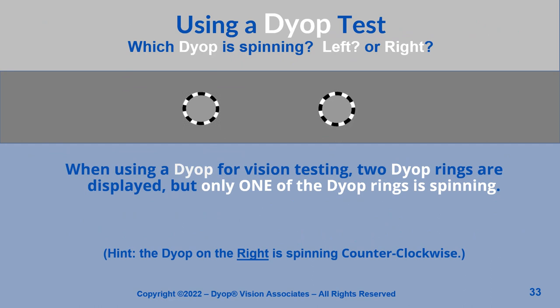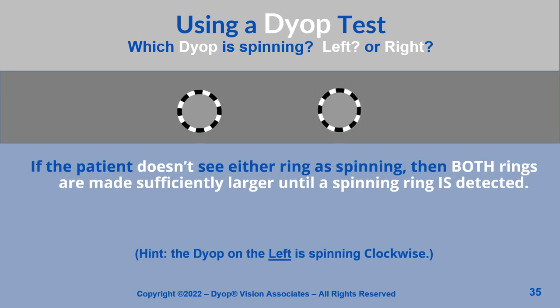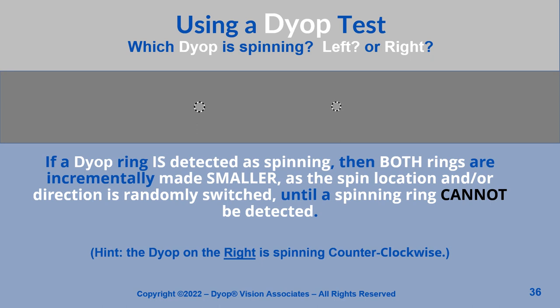When using a dyop for vision testing, two dyop rings are displayed, but only one of the dyop rings is spinning. The patient is asked which ring is spinning — the left ring or the right ring. If the patient doesn't see either ring as spinning, then both rings are made sufficiently larger until a spinning ring is detected. If a dyop ring is detected as spinning, then both rings are incrementally made smaller as the spin location and/or direction is randomly switched until a spinning ring cannot be detected.